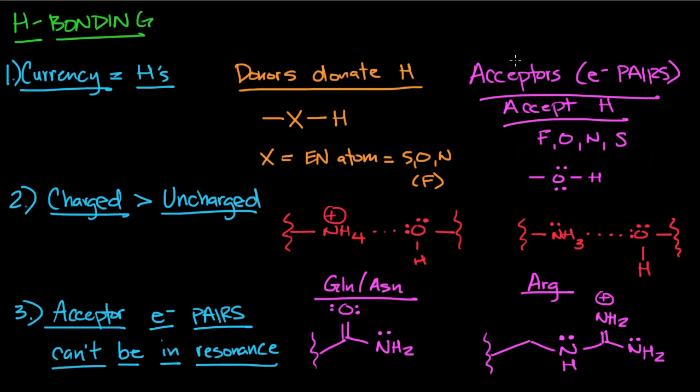A basic format or basic structure of a typical donor is going to be an electronegative atom that's attached to an H. The electronegative atom is going to be assigned a delta negative. The hydrogen is going to be assigned a delta positive. Typical electronegative atoms are sulfur, oxygen, and nitrogen.